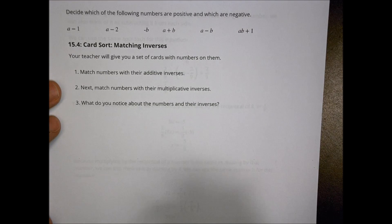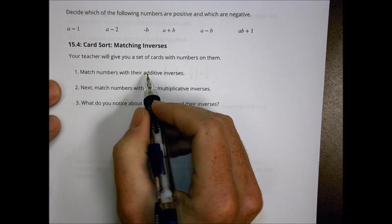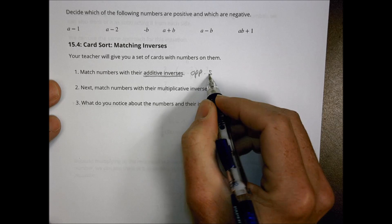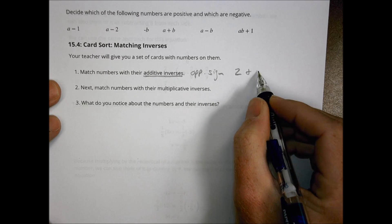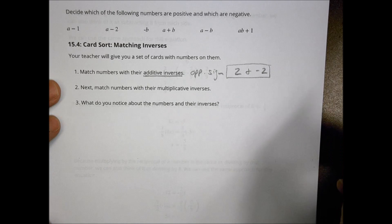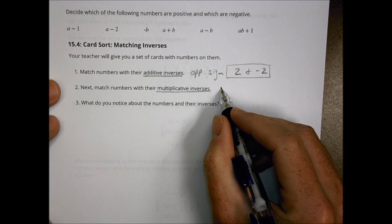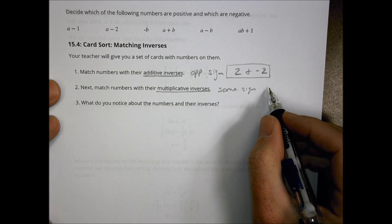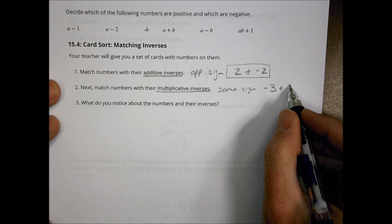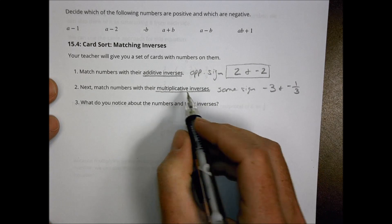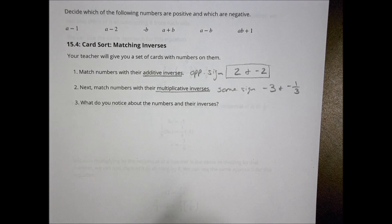Now you have a card sort activity. For this activity, you match numbers with their additive inverse — that means opposite signs, like 2 and negative 2. If you're matching multiplicative inverses, they have the same sign but are reciprocals of each other, like negative 3 and negative one third. For multiplicative inverses, they need the same sign; for additive inverses, they have the opposite sign.